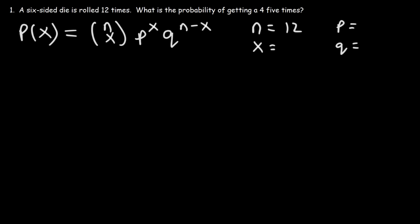How many successful events are we getting in this problem? We want to get a 4 five times, so x is 5. What is the probability of rolling a 4 using a six-sided die? Out of the six numbers we can get, there's only one successful number, which is a 4. So the probability of rolling a 4 is 1 out of 6.